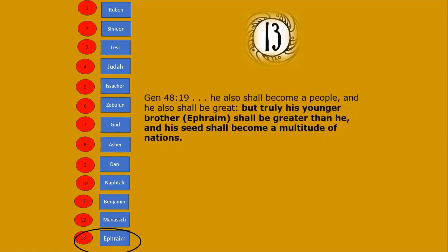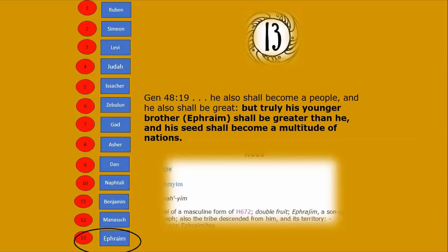Look at this verse, Genesis 48:19: 'And he also shall become a people, and he shall be great, but truly his younger brother' — who was Ephraim. This is taken from Genesis 48, when Joseph brought his two sons to be blessed by his father Jacob. Jacob crossed his arms and gave Ephraim the greater blessing — 'shall be greater than him, and his seed shall become a multitude of nations.' The word Ephraim means double fruit — the nation with the double blessing.